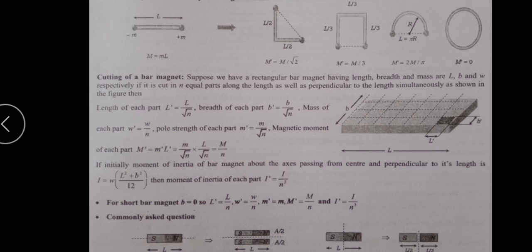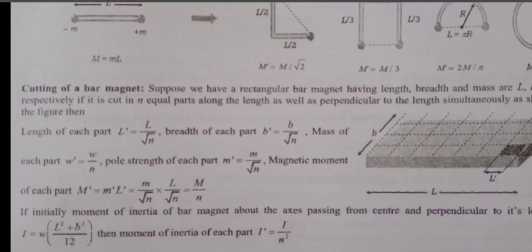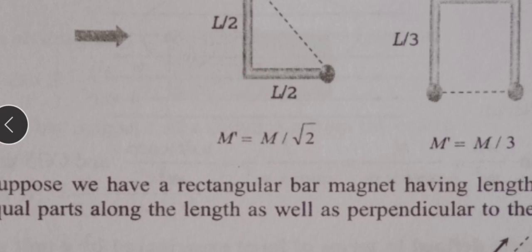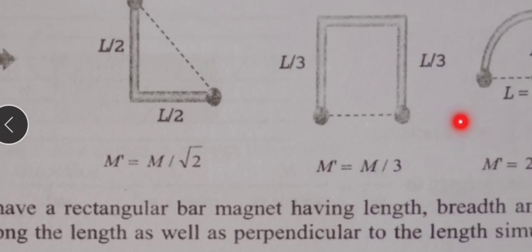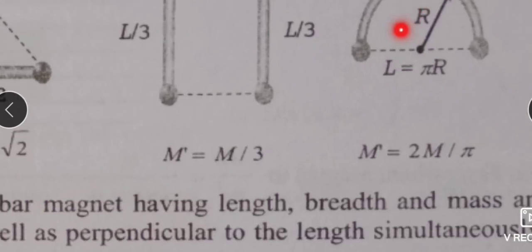In this lecture, we will solve important MCQs asked in the NEET and JEE exams. As shown in the figure, when a wire of length L is bent into different shapes, the effective length changes and we get different values of magnetic dipole moment. For a 90° angle bending, magnetic dipole moment is M/√2, and for a wire bent into 3 equal parts, it is M/3.